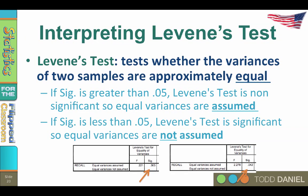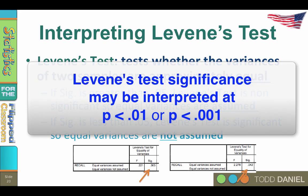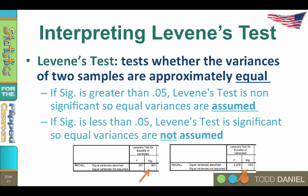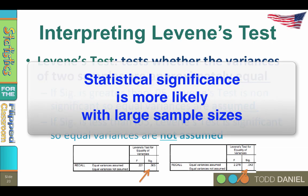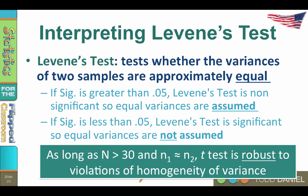Remember that you, as a researcher, can set the alpha level to the value most important to your research. Many researchers choose to interpret Levine's test using a cutoff significance criteria of 0.01, or even 0.001 instead of 0.05 — we want the groups to be really different before making adjustments. Using a more restrictive alpha level like 0.001 is especially useful with a large sample size, because any hypothesis test, including Levine's test, is more likely to be statistically significant with large samples. As long as your total sample size is greater than 30 and the two sample sizes are approximately equal, the t-test is robust to violations of homogeneity of variance.